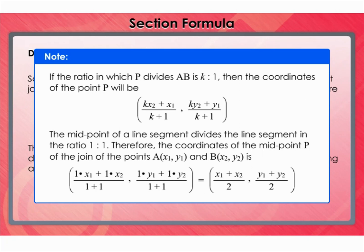The midpoint of a line segment divides the line segment in the ratio 1:1. Therefore, the coordinates of the midpoint P of the line joining the points A(x₁, y₁) and B(x₂, y₂) is given by the midpoint formula.